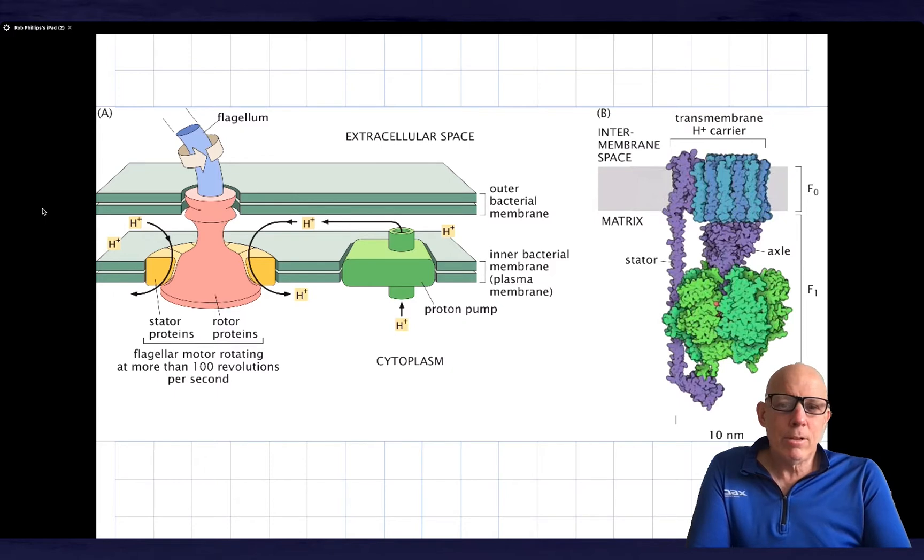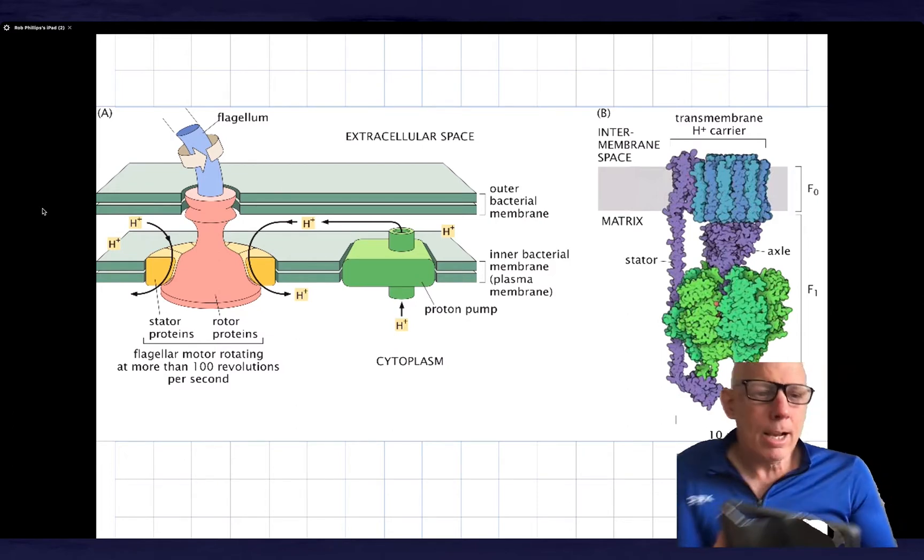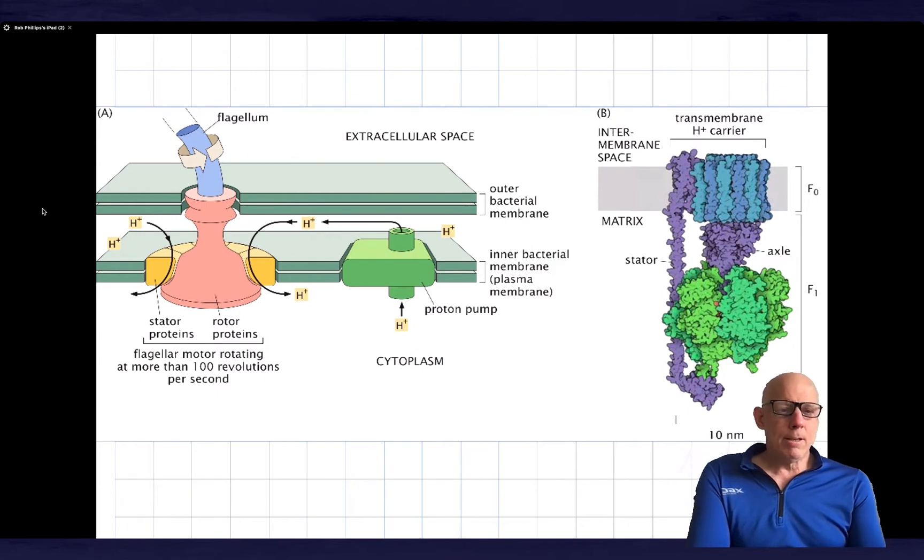Prior to doing that we need to say a few words about several case studies where the existence of a proton gradient is exploited in order to do useful things. As shown on the left, what you see is the flagellar motor for a bacterium such as E. coli that spins around and turns the flagellum, thus propelling the cell forward. On the right hand side you see the ATP synthase, which also spins by exploiting the proton gradient and then using that to add phosphate groups onto ADP, thus synthesizing ATP.